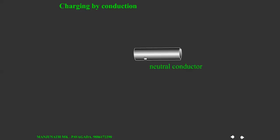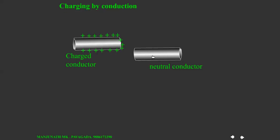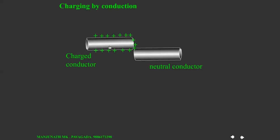Consider a neutral conductor and another charged conductor. When this charged conductor is kept in contact with the neutral conductor, some of the charges are transferred to the neutral conductor.